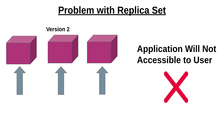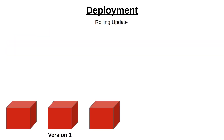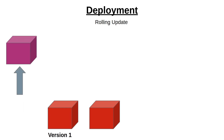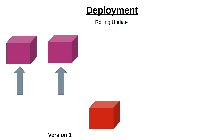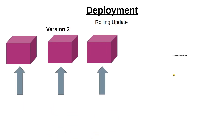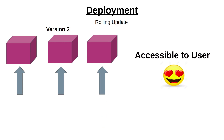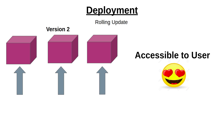So how do we solve these two problems? Deployment uses a rolling update strategy. ReplicaSet creates and deletes pods one by one, so if one pod is deleted the other pods will always be accessible to users — we don't have any downtime.